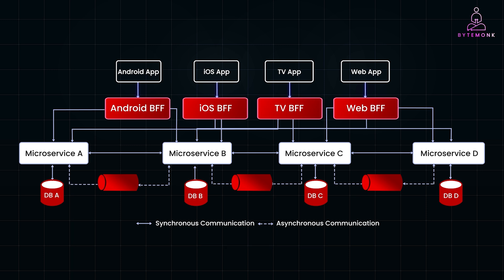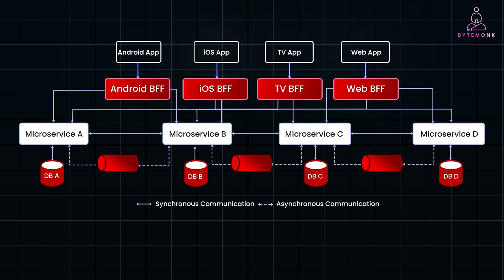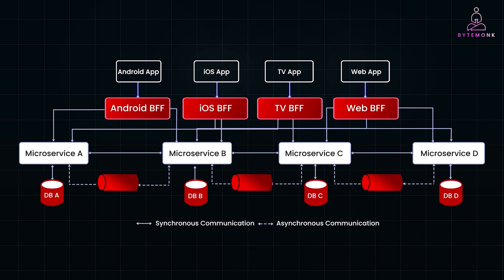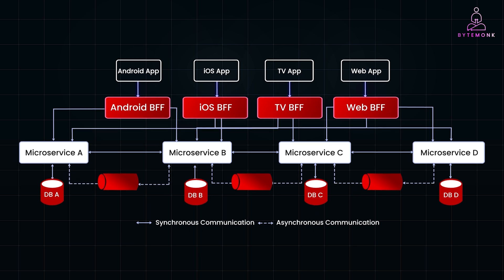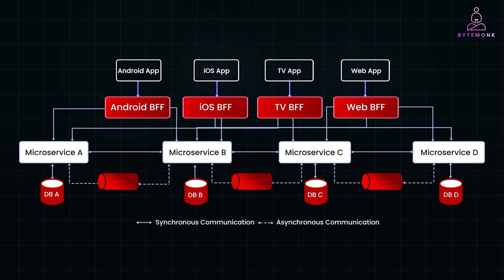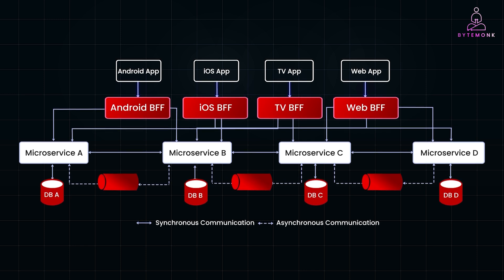Netflix's use of the BFF pattern brings clear benefits. Each BFF tailors data specifically for its client, optimizing delivery and boosting performance. Front-end teams can focus on building great user interfaces interacting with a single, predictable API, while independent backends reduce cross-team dependencies. This approach ensures high-resolution content for TV, data savings for mobile, and advanced features for web, delivering a smooth, customized experience across all platforms.